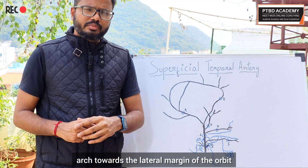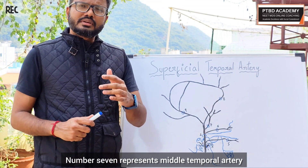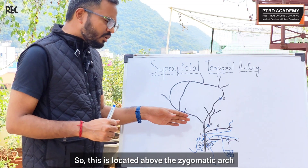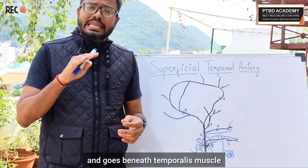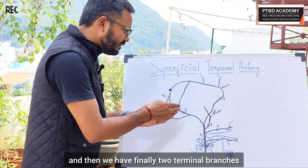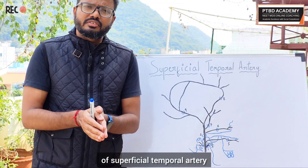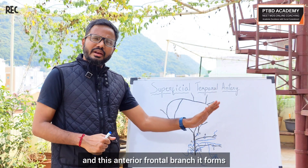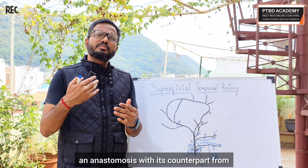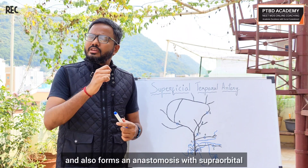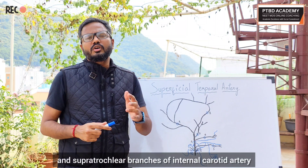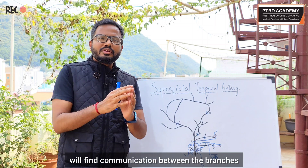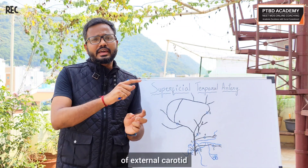Number six represents the zygomatic orbital branch, which is above the level of the zygomatic arch and goes along the zygomatic arch towards the lateral margin of the orbit. Number seven represents the middle temporal branch of the superficial temporal artery, which is located above the zygomatic arch and goes beneath the temporalis muscle. Finally, there are two terminal branches of the superficial temporal artery: the anterior frontal branch and the posterior parietal branch. The anterior frontal branch forms an anastomosis with its counterpart from the opposite side and also with the supraorbital and supratrochlear branches of the internal carotid artery.